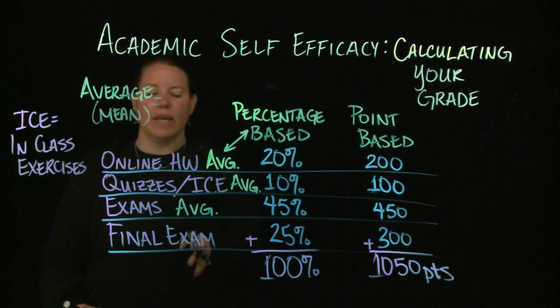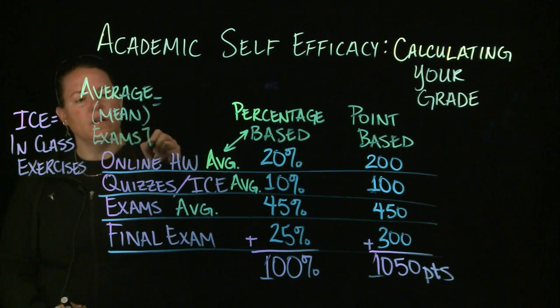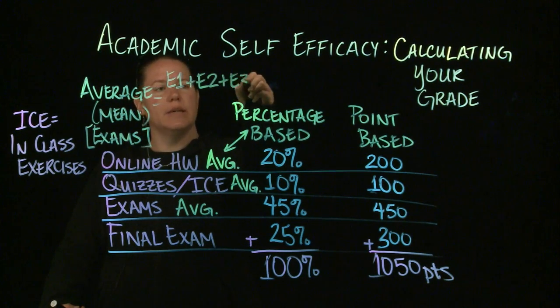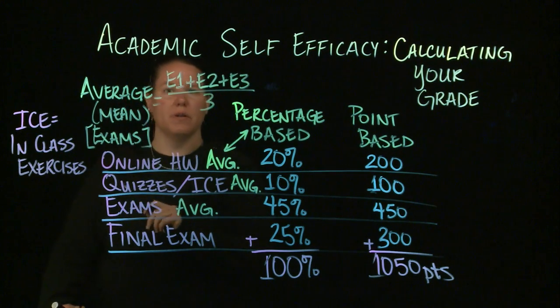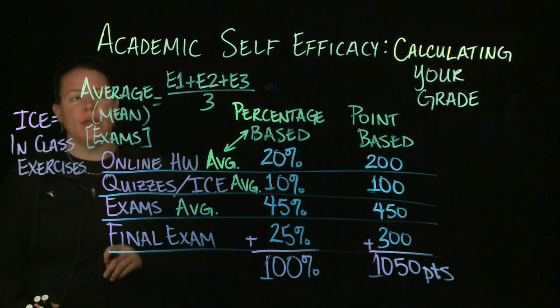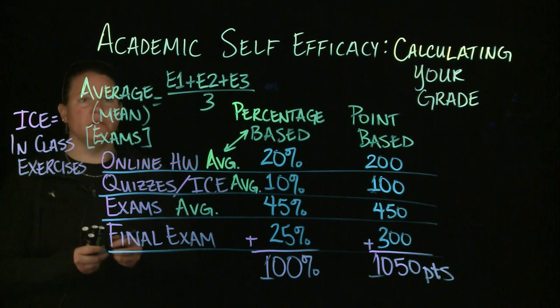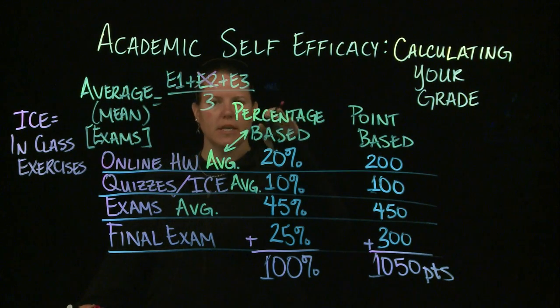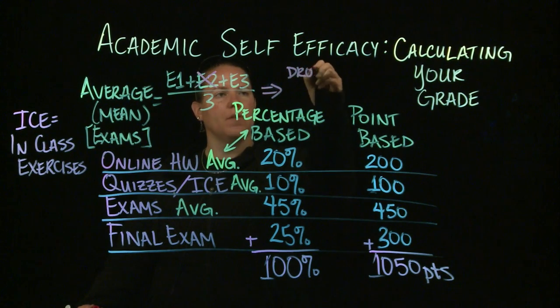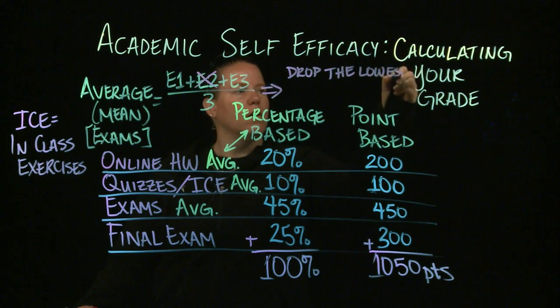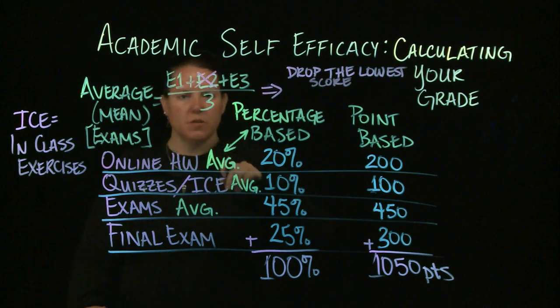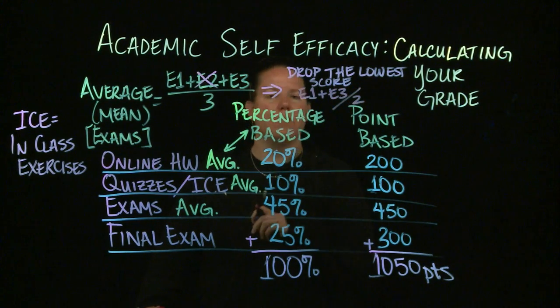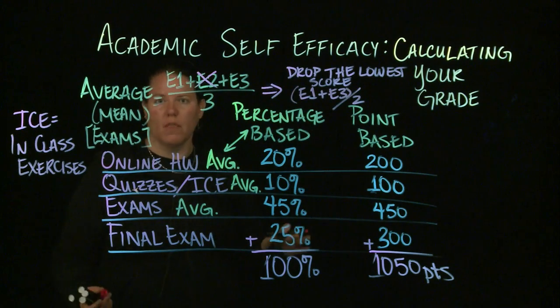Let's say we were taking the average of the exams. If you have three exams, here's your exam score one, exam score two, exam score three. You add those all together and divide by the total number of exams. If you drop the lowest one, then maybe if I had three exams and I dropped the lowest one, and you dropped out E2, then you've suddenly cut down your total number. You dropped the lowest score. That's what an average is.